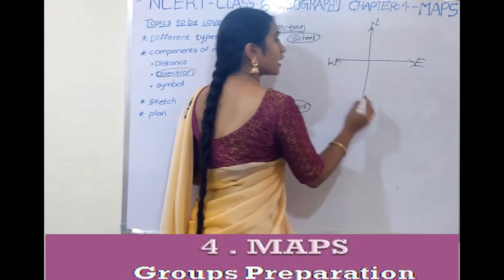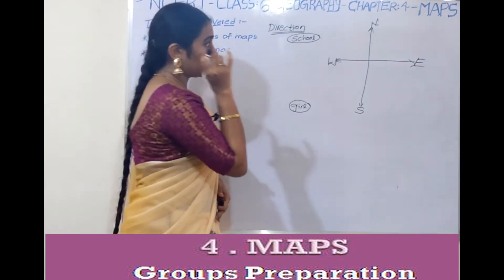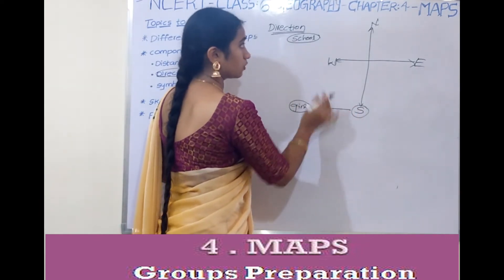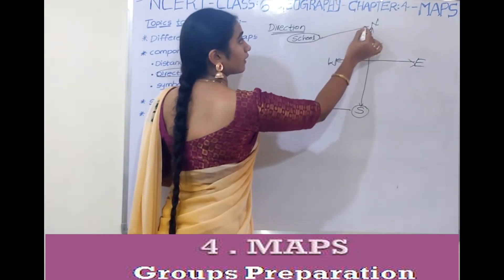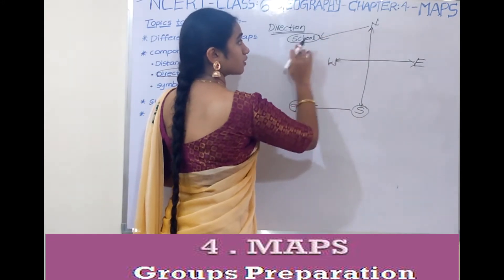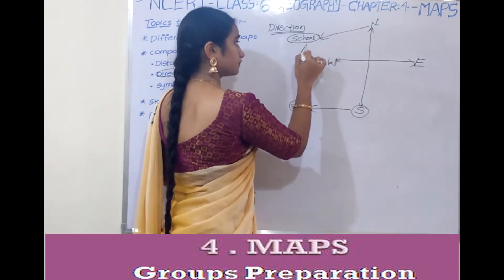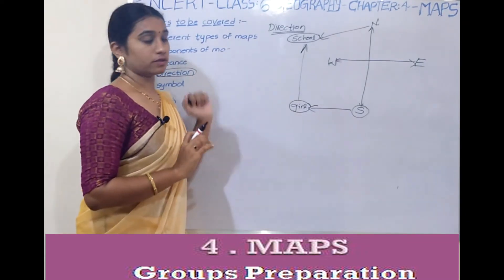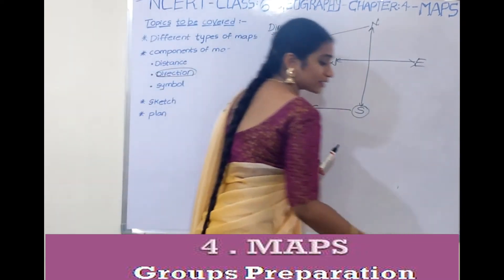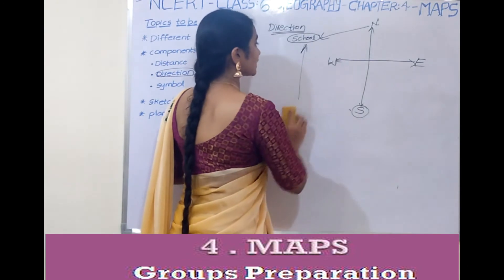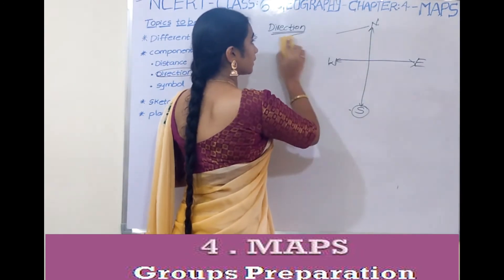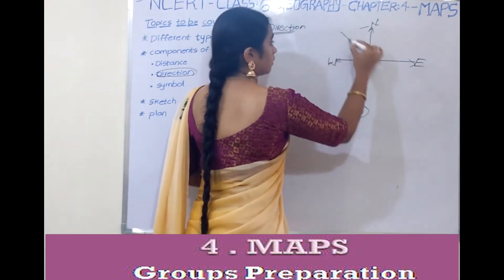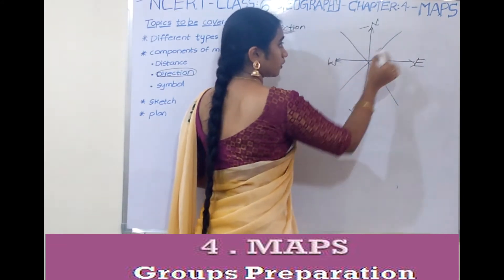These are the cardinal points. Now, to find direction — for example, the girl is in the south relative to the school. This is the north direction. That represents the direction. Intermediate points are also there.